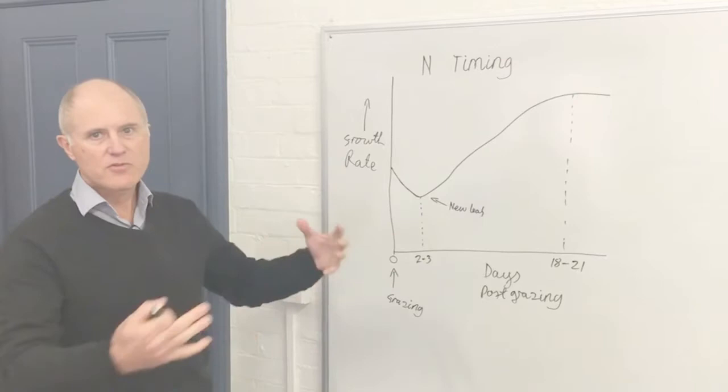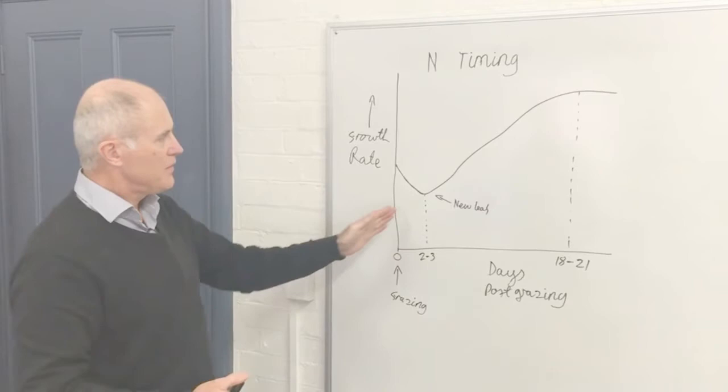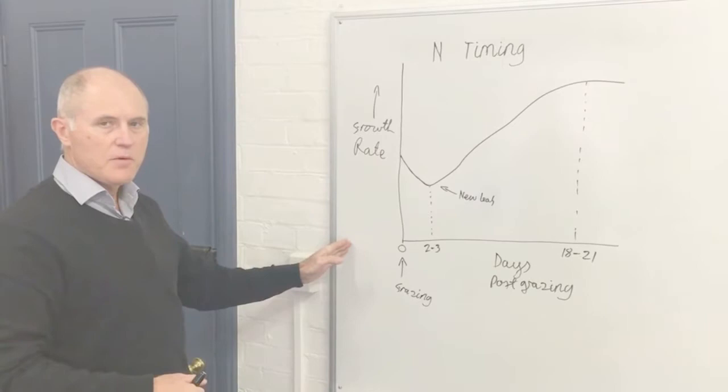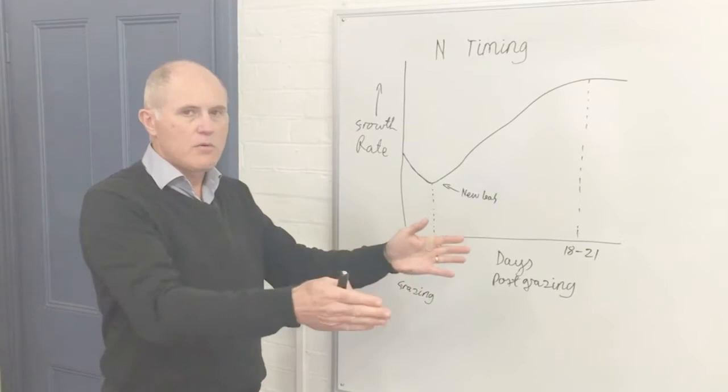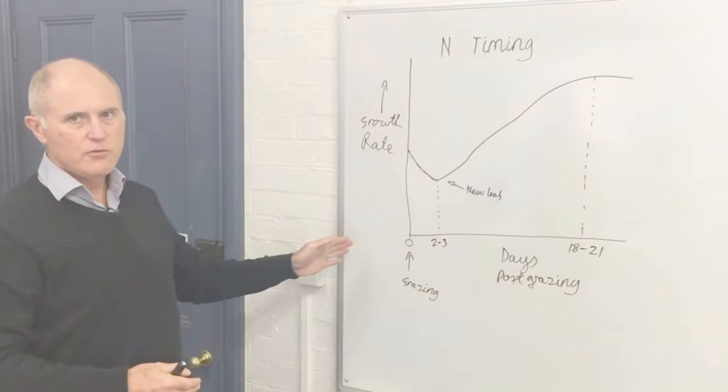Then it comes up, what's the ideal to do if you get a truck in to do the whole farm or half the farm? That's where there'd be some compromise around the ideal time. What we say is apply it between two to three days before grazing to two to three days after grazing. That allows you to portion up, say, a quarter of the farm and get the truck in to do all the paddocks that are two or three days to or from their next grazing.